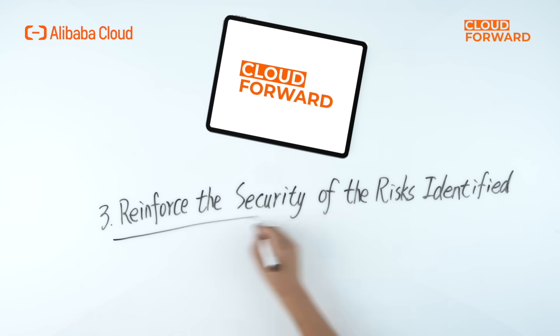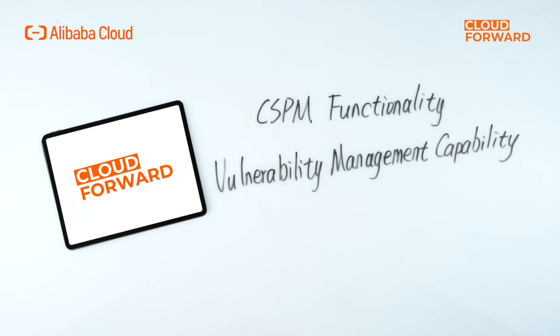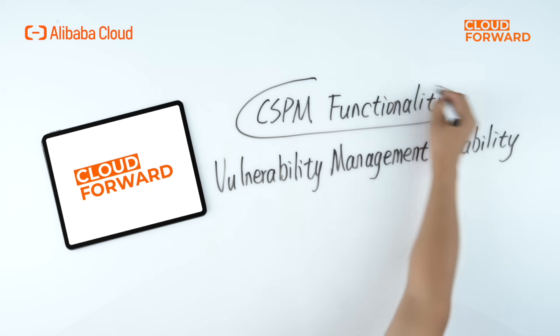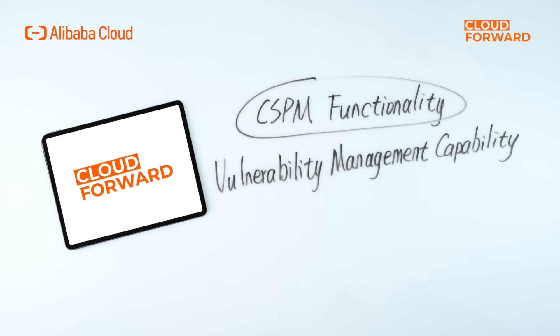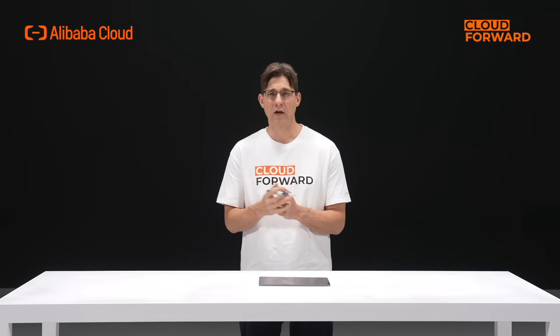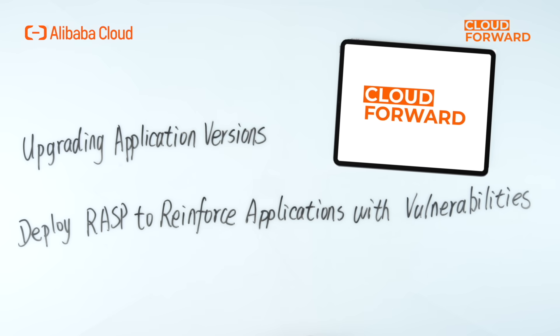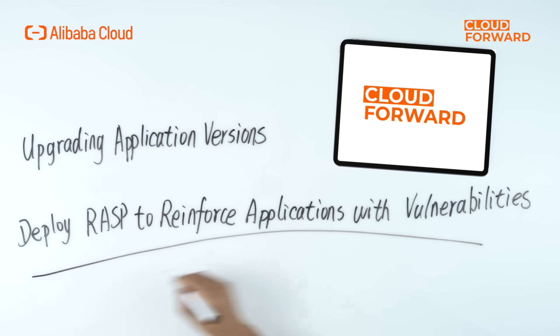The third step is to reinforce the security of risks identified. The CSPM functionality contained within Cloud Security Center can automatically fix risky product configurations, while the vulnerability management capability can patch and fix operating system vulnerabilities. For the repair of application vulnerabilities like Log4j, it can be resolved by upgrading application versions, and RASP can be deployed to reinforce applications with vulnerabilities.